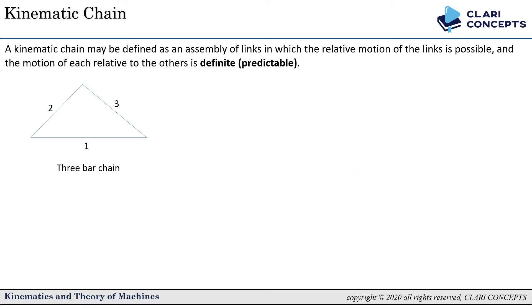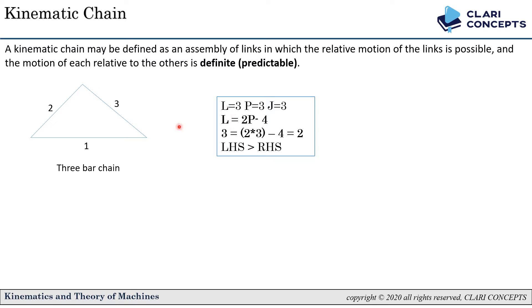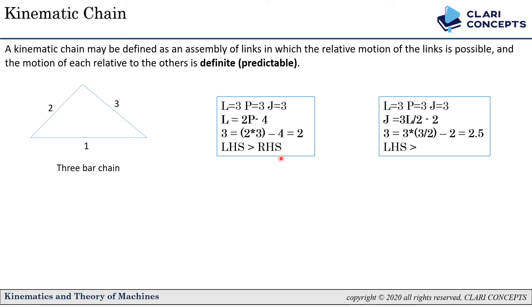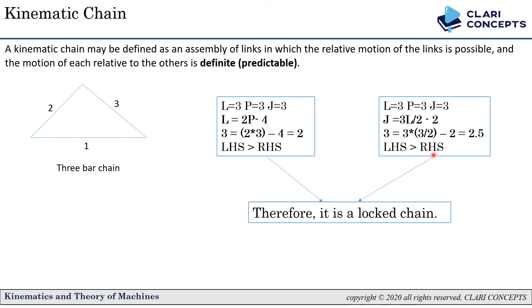For the three bar chain: l = 3, p = 3, j = 3. Applying the first equation: l = 2p − 4 gives 3 = 2(3) − 4 = 2, so LHS is greater than RHS. The second equation also gives LHS greater than RHS. From both equations we conclude this is a locked chain — no relative motion is possible between links 1 and 2, 1 and 3, or 2 and 3.